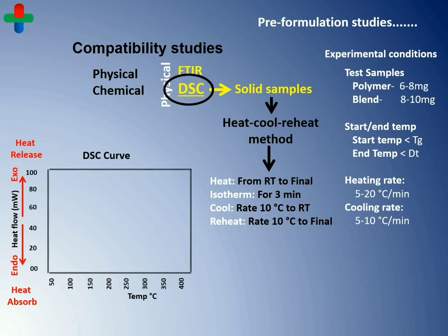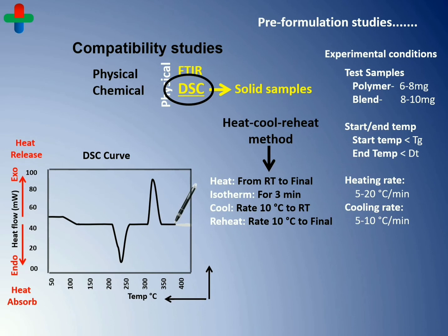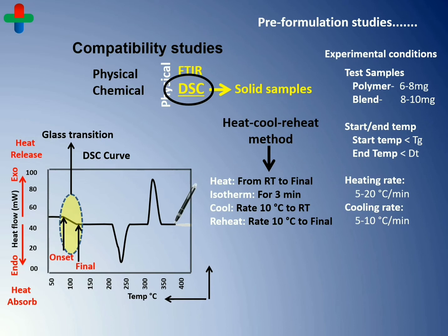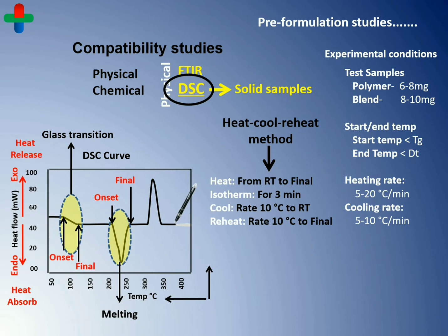These conditions will lead to the DSC thermogram of the drug. The X-axis of this graph depicts temperature increment and the Y-axis depicts heat flow. There are three types of curves that can be obtained depending upon the nature of the samples. The first curve in the heating phase is the glass transition temperature, which gives data in a range from onset temperature to final temperature. The second peak is an endothermic peak where the melting point of the drug is obtained; the onset and final point are very close, so a sharp melting point is observed. The third peak in the cooling cycle is the exothermic phase, also known as the crystallization peak.